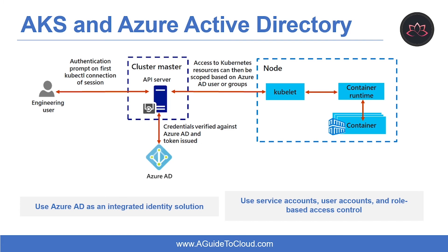Now let's understand how AKS can be integrated with Azure Active Directory. With Azure Active Directory-integrated AKS clusters, you can grant users or groups access to Kubernetes resources within a namespace or across the cluster. This approach provides a single source for user account management and password credentials, and the user can only access the resources as defined by the cluster administrator.